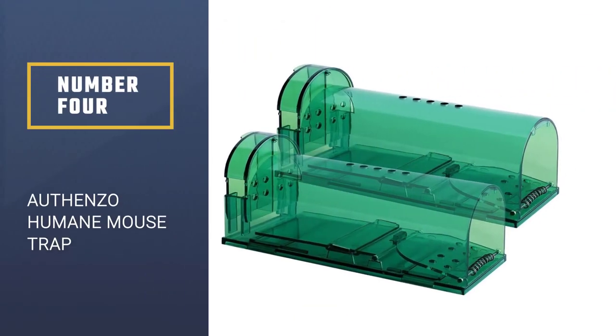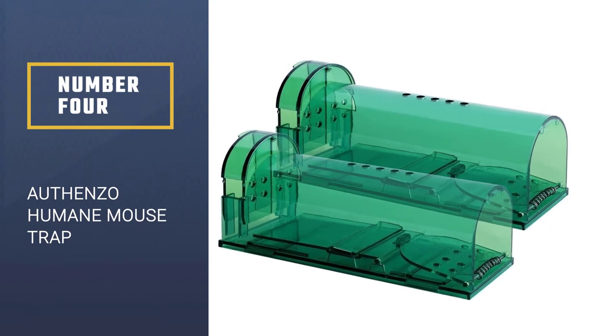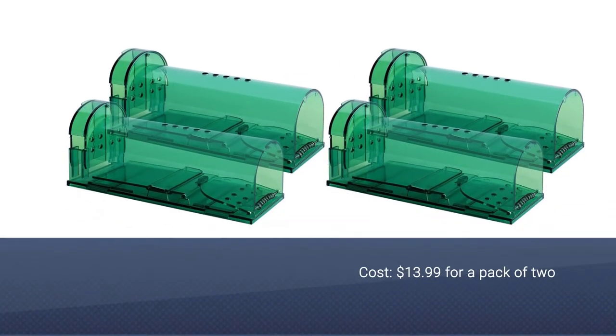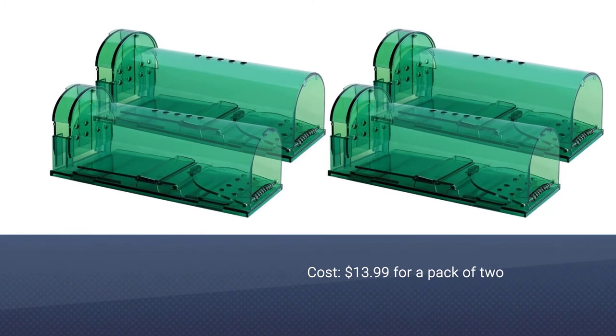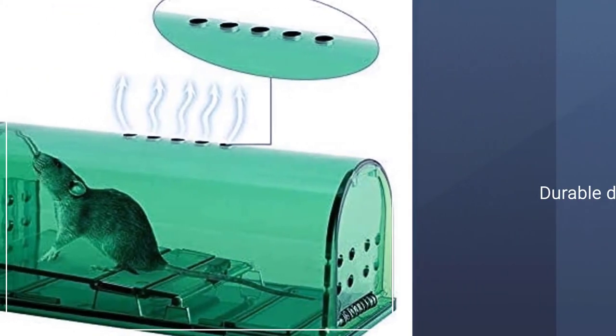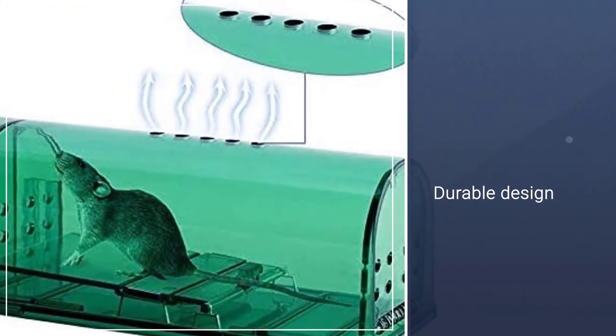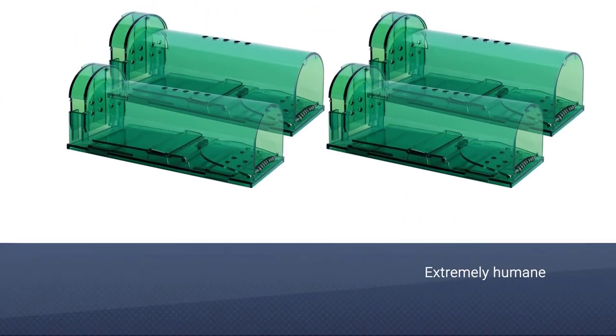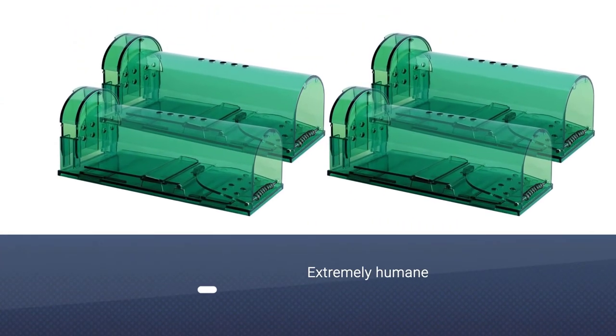Number 4: Othenso Humane Mouse Trap. Because this mousetrap is made from plastic materials, it is easy to clean and reusable. It has the same operating mechanisms as a traditional cage model. You also set the bait similarly to using a cage trap.